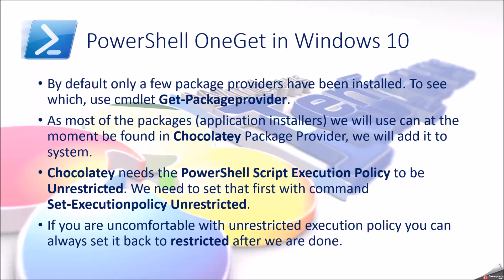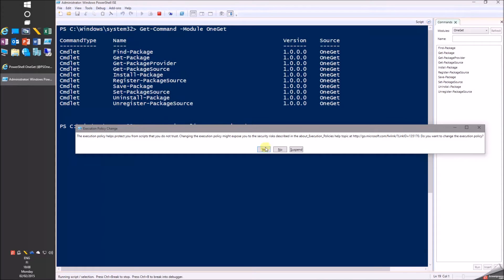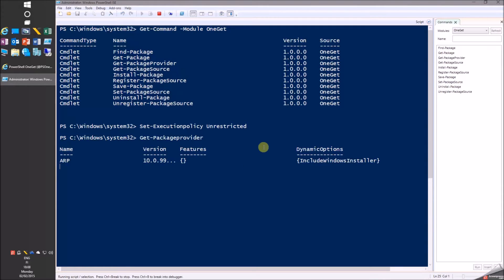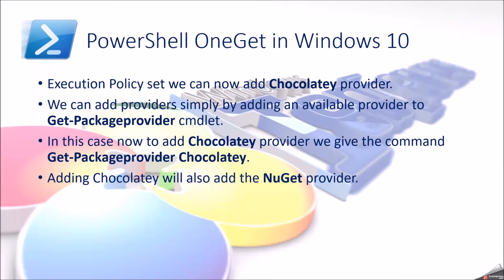Chocolatey needs the PowerShell script execution policy to be unrestricted. We need to set that first with the command Set-ExecutionPolicy Unrestricted. If you are uncomfortable with the unrestricted execution policy, you can always set it back to restricted after we are done. With the execution policy set, we can now add the Chocolatey provider using the command Get-PackageProvider Chocolatey.